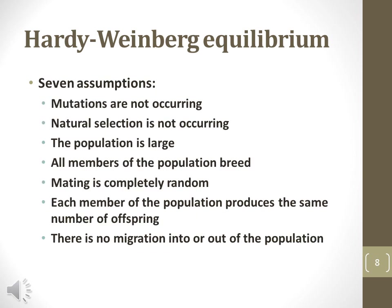The model used for the Hardy-Weinberg equilibrium must make certain assumptions to be accurate. Violations of these assumptions are indications of a potential evolutionary event. The model assumes mutations do not occur; therefore, no new alleles appear in populations. Natural selection does not occur, so no alleles give a reproductive advantage. A population is indefinitely large, and each member has an equal probability of mating with every other member. The same number of offspring is produced by all individuals.